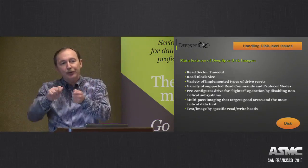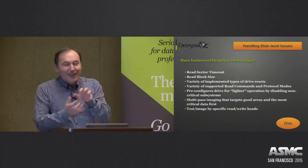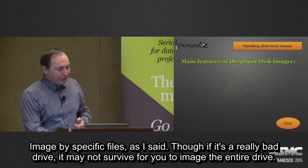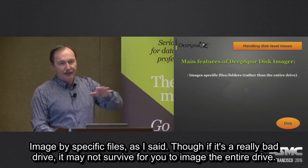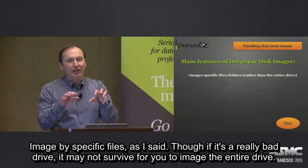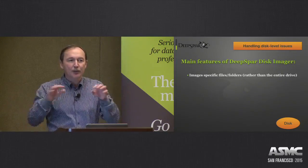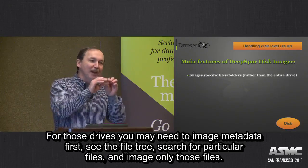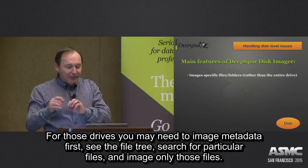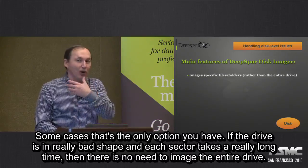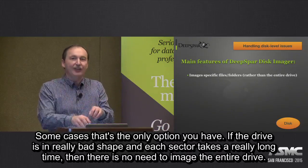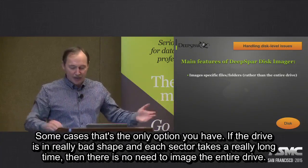You are getting more and more things to tune up when working with the actual physical device. Image by specific files — as I said, if this is a really bad shape drive, it may not survive long enough for you to image the entire drive. For those drives, you may need to image only metadata first, see the file tree, search for particular files, and image only those files. In some cases, that's the only option you have. If the drive is really in bad shape and every single sector takes a long time, there is no need to image the entire drive.